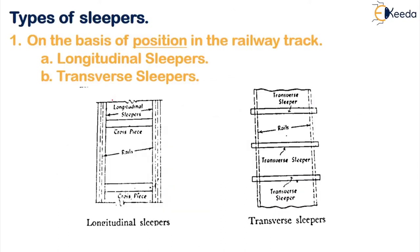To get started, the first type of sleeper division is based on the position in the railway track — how exactly the sleeper is laid in the railway track. Based on that classification, we have longitudinal sleepers and transverse sleepers. It is very simple to understand.